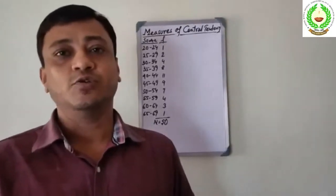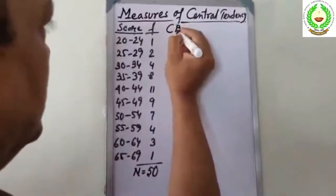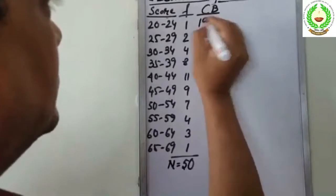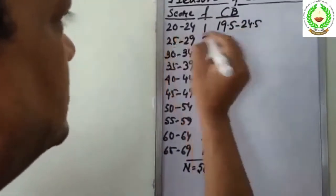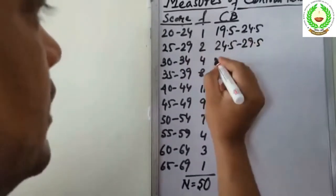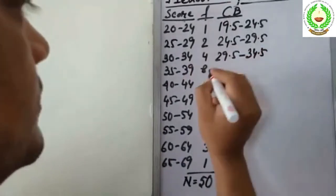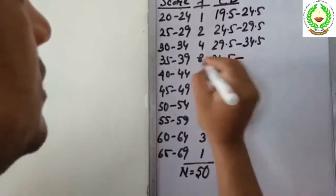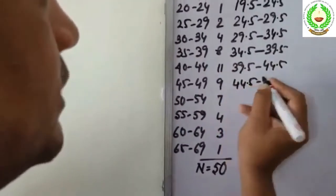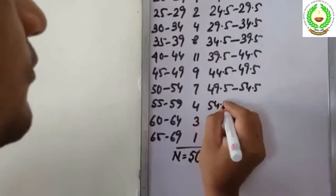For the continuous distribution, we use class boundaries. The class boundaries are: 19.5–24.5, 24.5–29.5, 29.5–34.5, 34.5–39.5, 39.5–44.5, 44.5–49.5, 49.5–54.5, 54.5–59.5, and 59.5–64.5.